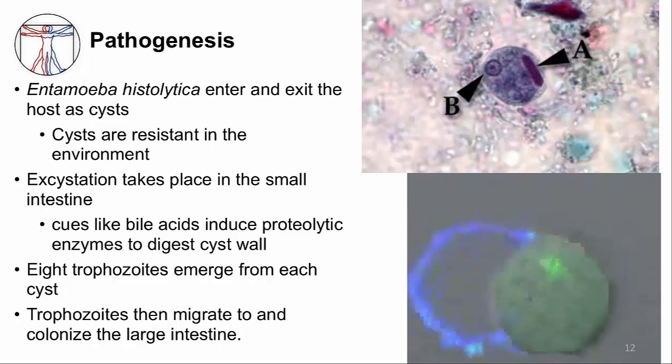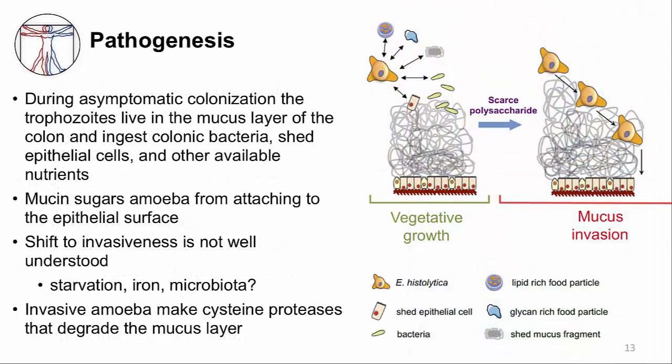The top picture shows a cyst that can be seen in a patient's stool. In the colon is where trophozoites colonize and persist. They don't necessarily cause disease — remember, 90% of people are asymptomatic. The trophozoites live in the mucus layer during this asymptomatic period, mostly eating bacteria and dead epithelial cells. The mucus coat is made of sugars that can bind to lectins on the amoeba surface, which prevent them from binding to the epithelial cell. It's not fully understood why they transition into being invasive; some theories include starvation, low iron, or changes in the microbiota.